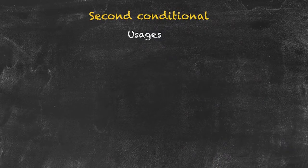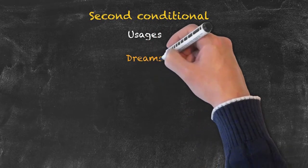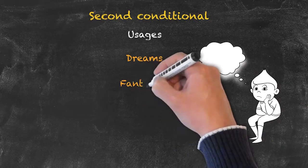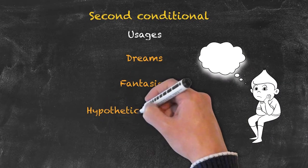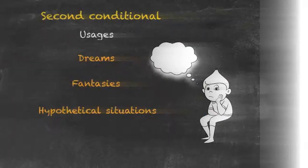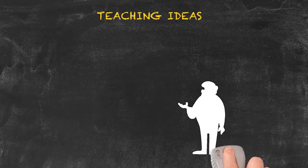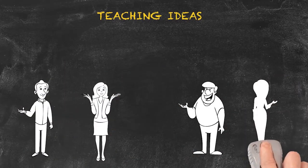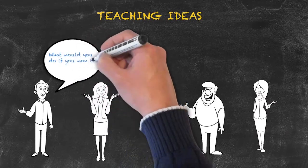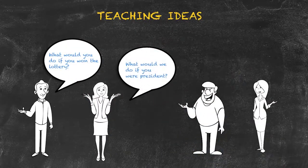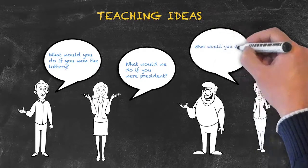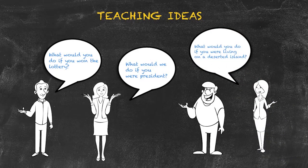Let's have a look at the usages for the second conditional. We're looking at dreams — 'if I won the lottery' — fantasies, and hypothetical situations. A typical teaching idea is for students to work in groups of two to four and discuss situations such as: 'what would you do if you won the lottery?', 'what would you do if you were president?', 'what would you do if you were living on a desert island?' — typical situations used to create second conditional sentences.